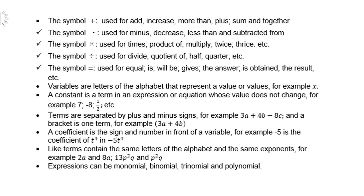Now, terms are separated by plus and minus signs, for example 3a + 4b - 8c, and a bracket is one term. For example, (3a + 4b) inside the bracket is one term. A coefficient is the sign and number in front of a variable, for example negative 5 is the coefficient of -5t^4.